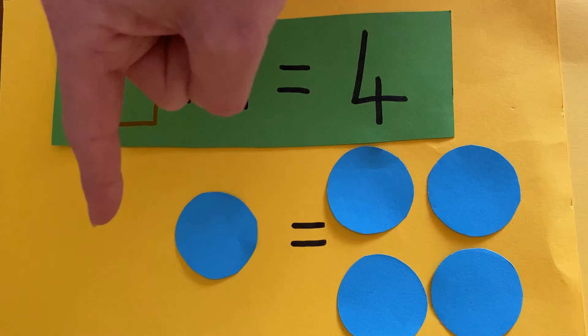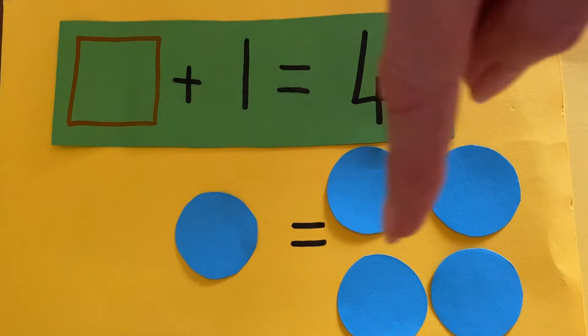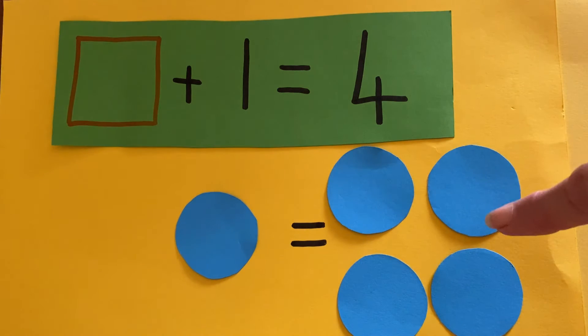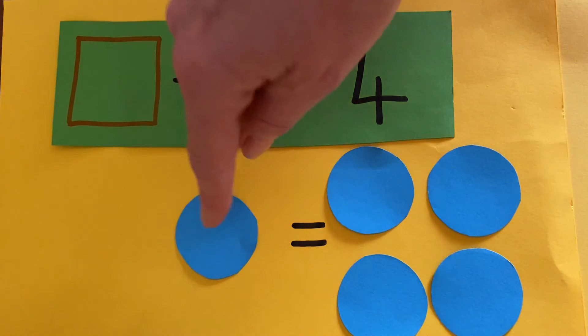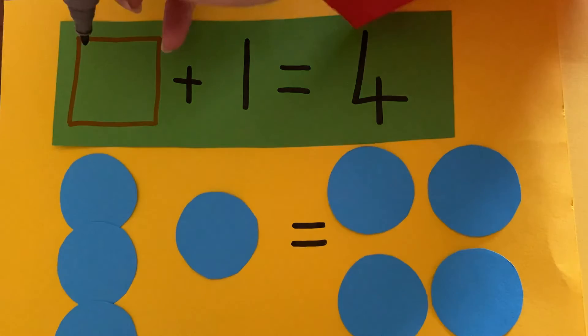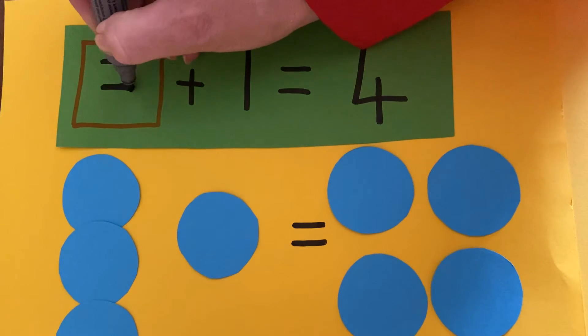How many more do I need this side to make it the same as that side? Four. So one, two, three, four. How many have I added this side? Three. That must be my missing number.